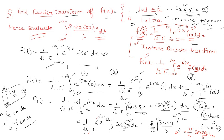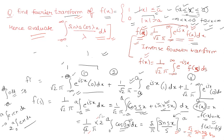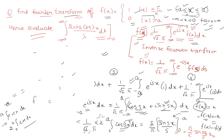Now the question asks to evaluate a specific integral. Whenever you are given such an evaluation alongside a Fourier transform, you need to apply the inverse Fourier transform as well. We have already found F(s) = √(2/π) · sin(sa)/s. For the inverse Fourier transform, we use f(x) = 1 by root 2π, limit minus infinity to infinity, e raised to power minus iota·sx times F(s) ds.